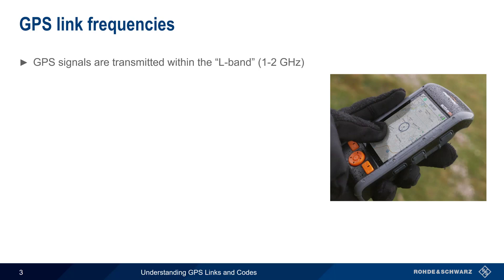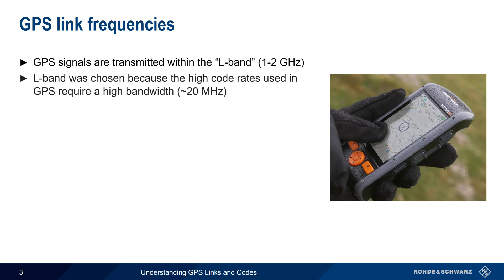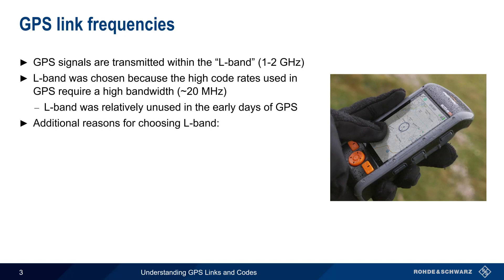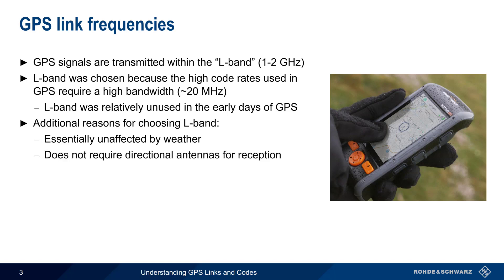We'll start with links. All GPS signals are transmitted within the so-called L-band, on frequencies between 1 and 2 GHz. The main reason that L-band was chosen for GPS is the high code rates used in GPS require a relatively high bandwidth, about 20 MHz. This may not sound like much by today's standards, but back in the early days of GPS — that is, the 1970s — L-band was still relatively unused, and therefore a good choice. There are some other reasons for choosing L-band. First, signals are essentially unaffected by weather. L-band frequencies also don't require directional antennas for reception — something that's important in a mobile GPS receiver. And lastly, ionospheric delay at L-band frequencies is manageable — more on this shortly.